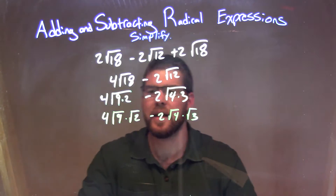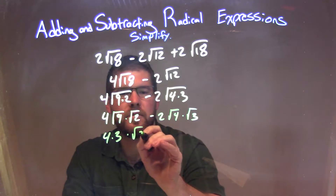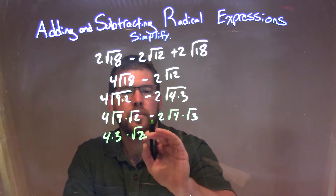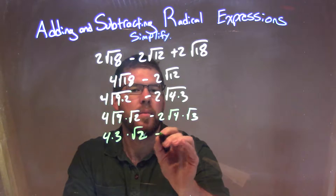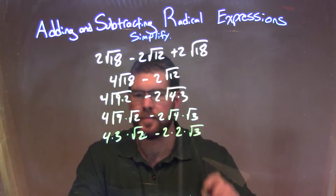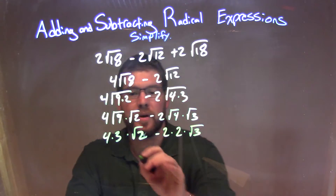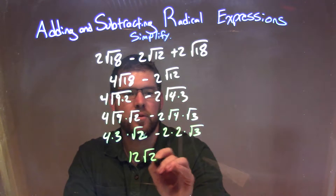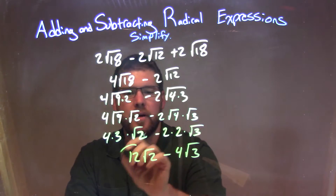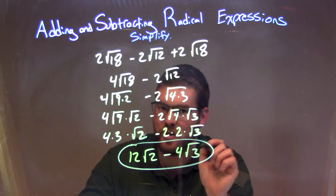Square root of 9 is easy — that's 3. So we have 4 times 3 times square root of 2, minus 2 times square root of 4, which is 2, times square root of 3. Now let's simplify a little more: 4 times 3 is 12, so we have 12 square root of 2. And 2 times 2 is 4, so minus 4 square root of 3. And there we have it — our final answer: 12 square root of 2 minus 4 square root of 3.